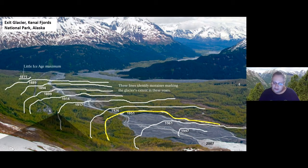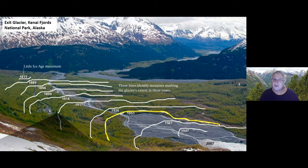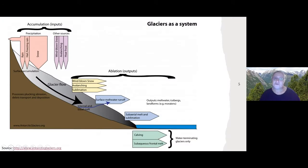Most glaciers in the northern hemisphere have been in retreat since the Little Ice Age maximum — marked here at 1815. That was a period of global cooling, particularly strong in the North Atlantic, affecting North America, Northern Europe, and Scandinavia. It lasted around 500 years, peaking roughly between 1750 and 1850 depending on region. So we know glaciers have been retreating since then. Why are we so concerned now? The speed of ice retreat has actually accelerated in recent decades as climate change has led to increased temperatures.